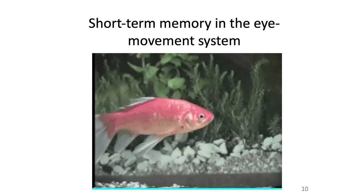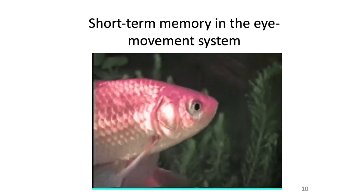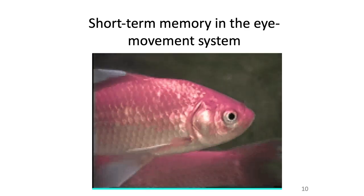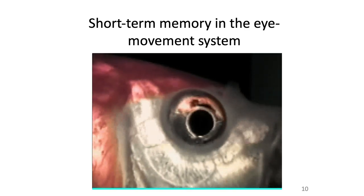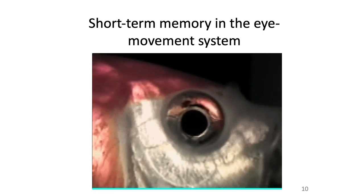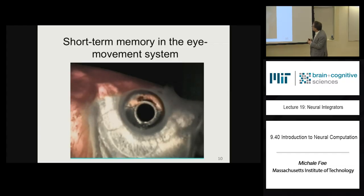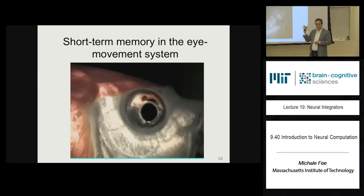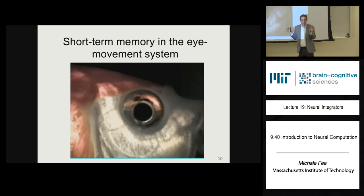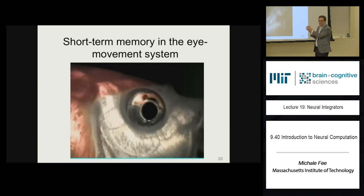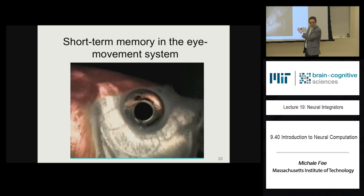These are goldfish. Goldfish have an ocular motor control system very similar to that in mammals and in us. You can see that they move their eyes around and actually make saccades. If you zoom in on the eye, you can see discrete jumps in the position of the eye, with the eyes held in a fixed position between those jumps. If you were to anesthetize the eye muscles, the eye would spring back to some neutral location — the eye muscles are like springs.